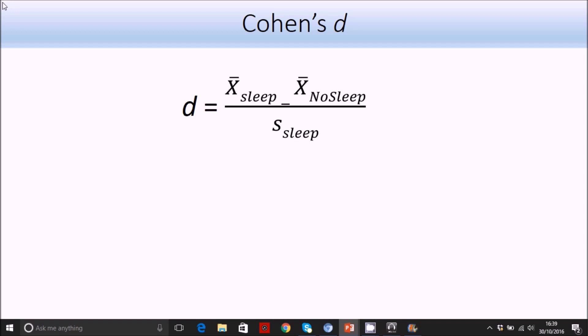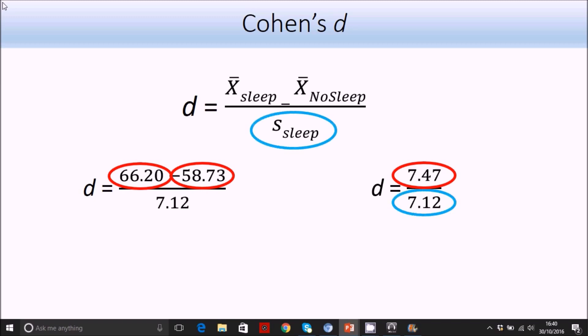For this example, we've got Cohen's D. We take the mean score of the sleep group and then minus the mean score from the no sleep group. We calculate that value and then divide that by the standard deviation for the control group, which we're going to consider the sleep group. So the mean scores were 66.2 for the sleep group, 58.73 for the no sleep group, which gives us 7.47. We divide by 7.12, which was the standard deviation for the sleep group, and this leaves us with a Cohen's D of 1.05 or just above one.